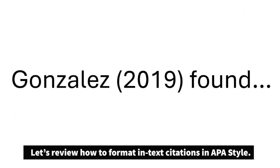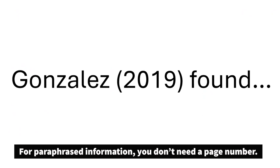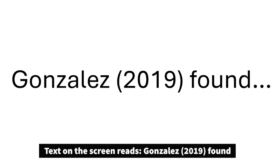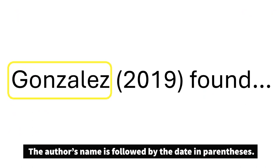Let's review how to format in-text citations in APA style. For paraphrased information, you don't need a page number. Text on the screen reads 'Gonzalez (2019) found.' The author's name is followed by the date in parentheses.